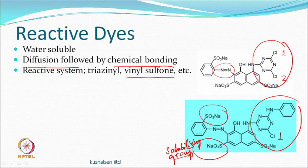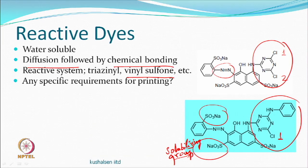There are other types of reactive groups such as vinyl sulfone, with different fixation conditions. Various reactive groups can be used, but all should have relatively low reactivity. The specific requirement for printing is that the temperature of fixation should be high.